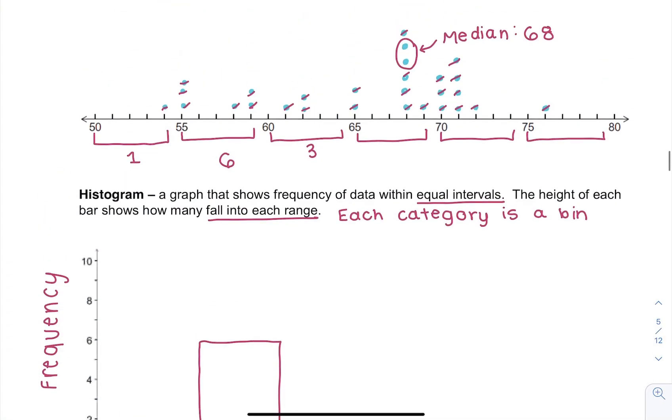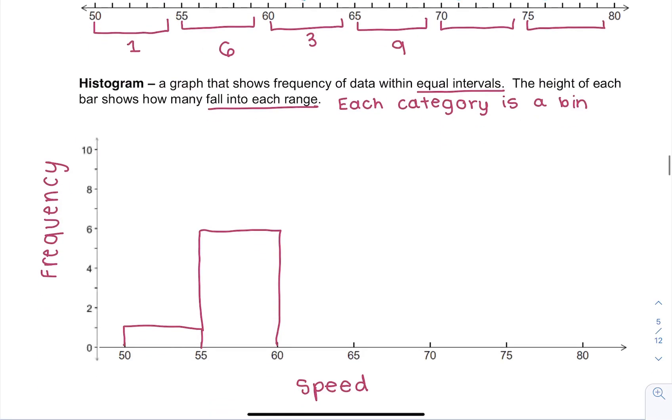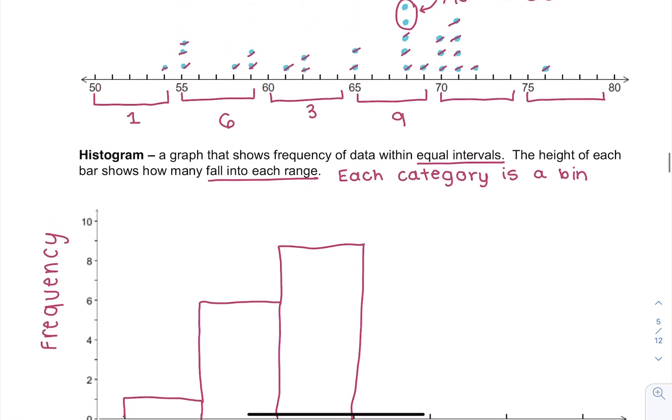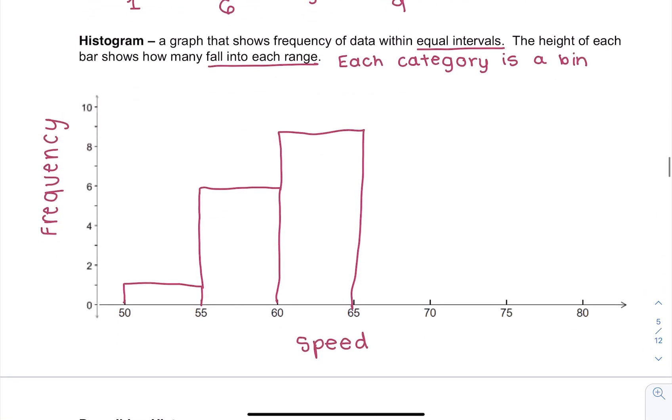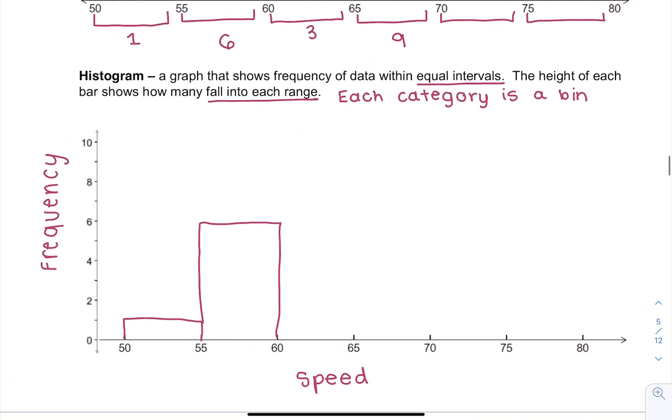Next up we have the 65 to 69 range, so one, two, three, four, five, six, seven, eight, nine. So there's actually nine in this category.